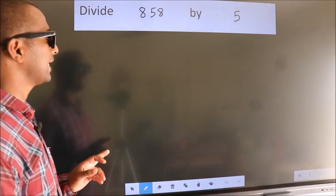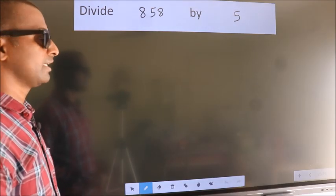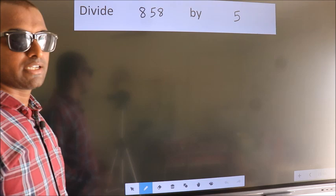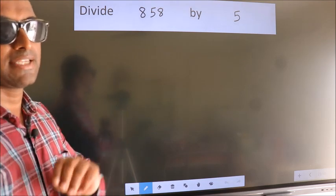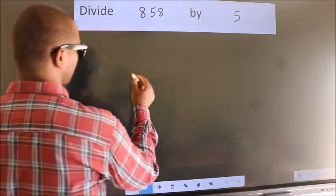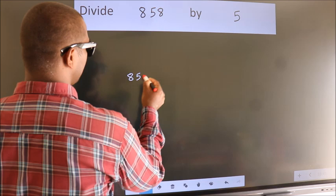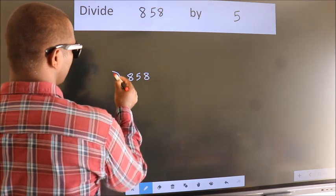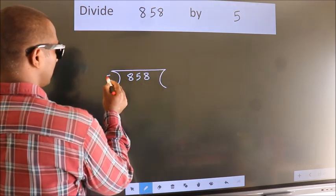Divide 858 by 5. To do this division, we should frame it in this way. 858 here, 5 here.